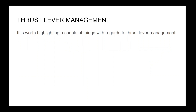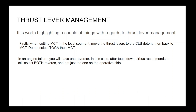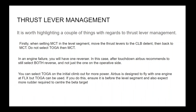It is worth highlighting a couple of things regarding thrust lever management. When setting MCT in the level segment, move the thrust levers to the climb detent then back to MCT — do not select TOGA then MCT. In an engine failure you will have one reverse; after touchdown, Airbus recommends selecting both reversers, not just the one on the operative side. You can select TOGA on the initial climb-out for more power — the A320 is designed to fly with one engine at flex, but if you use TOGA, ensure it is before the level segment and expect more rudder required to centre the beta target.